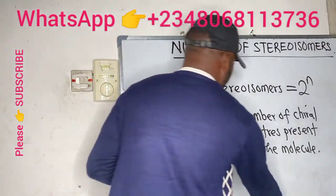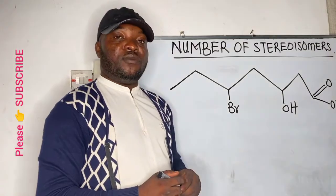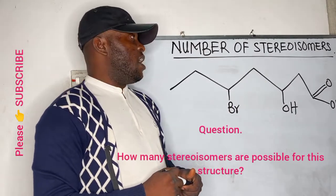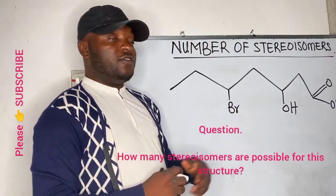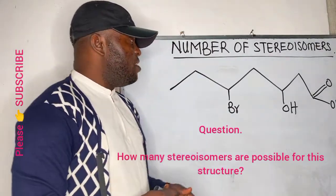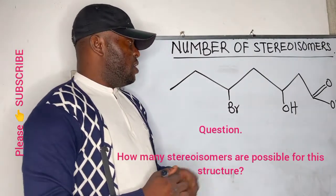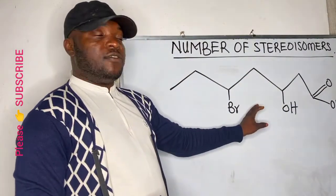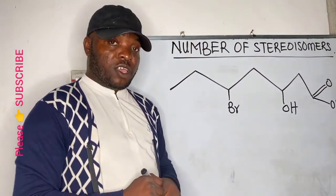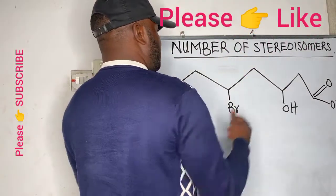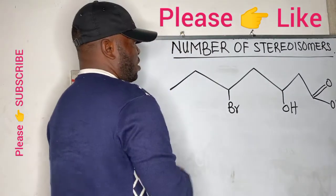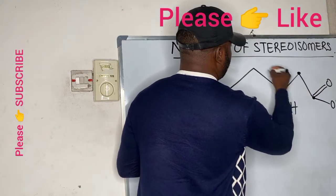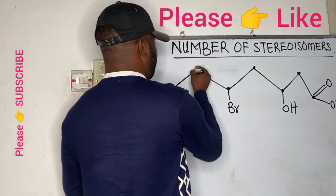Let's take an example. If you look at this question on the board, the question asks: how many stereoisomers are possible for this structure? All we need to do is find the number of chiral centers or chiral carbons present in the structure given to us. Let's draw this in the normal form. The carbon atoms here are 1, 2, 3, 4, 5, 6, 7.